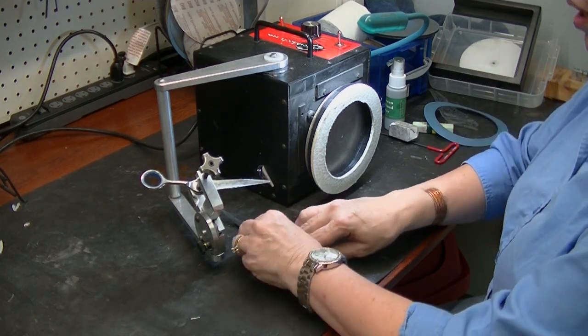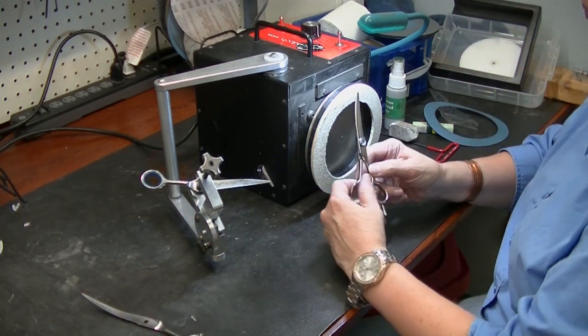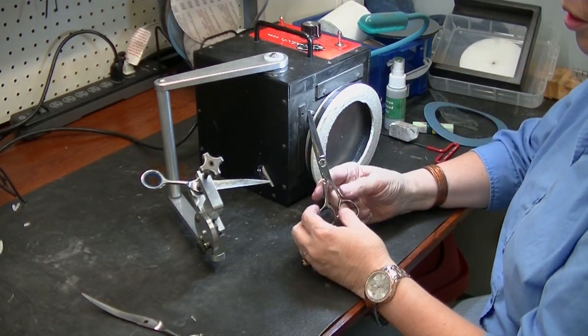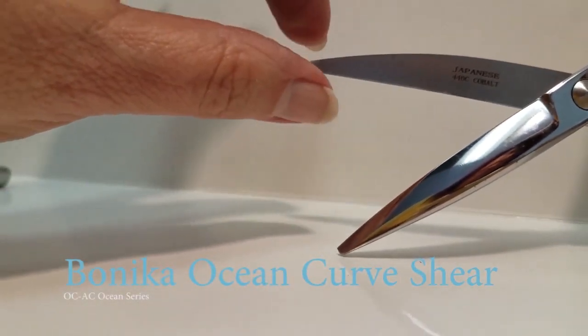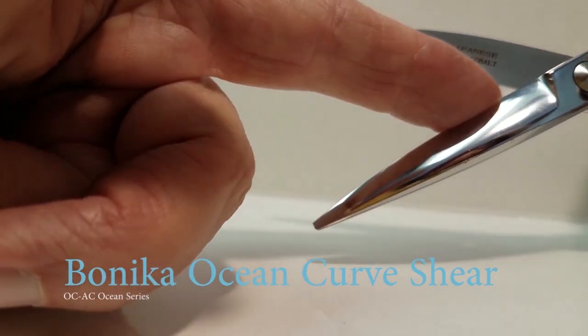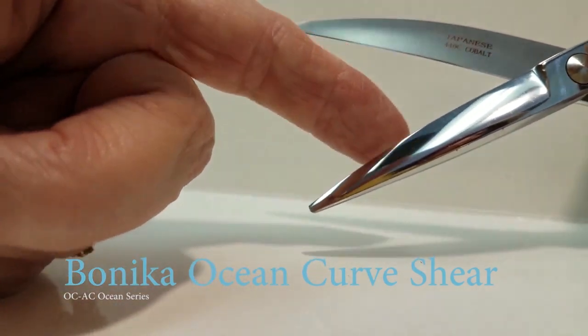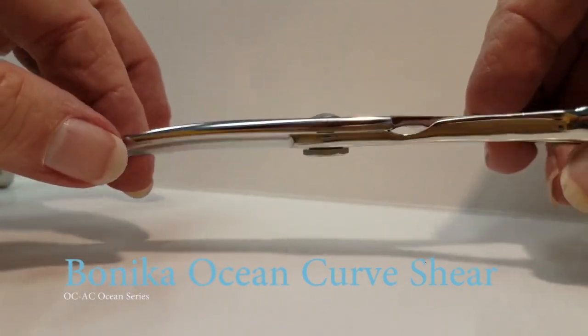This shear is our new Ocean Shear. This is the reason I came up with the idea that we needed this curve adapter. Our Ocean Curve Shear is used by stylists for slide cutting. It has to be very sharp, very smooth. It's actually a 55 degree angle. And we created the curve adapter in order to do this shear, but it can do any shear.